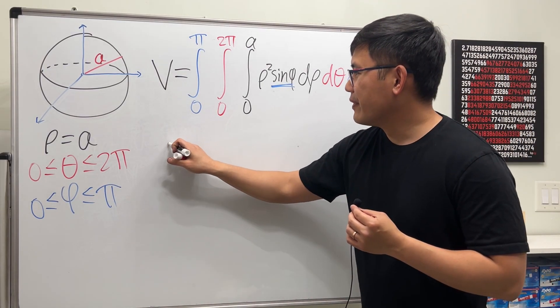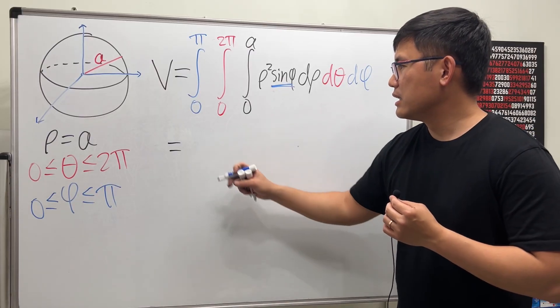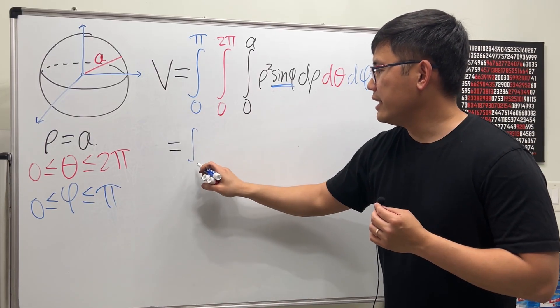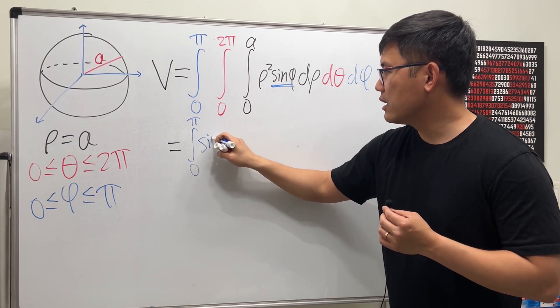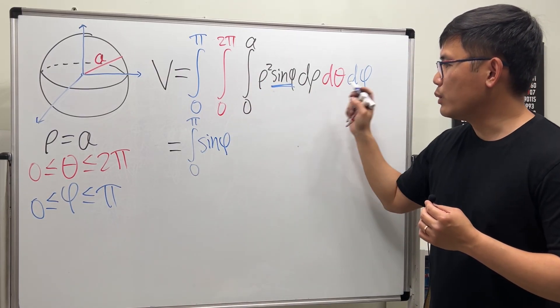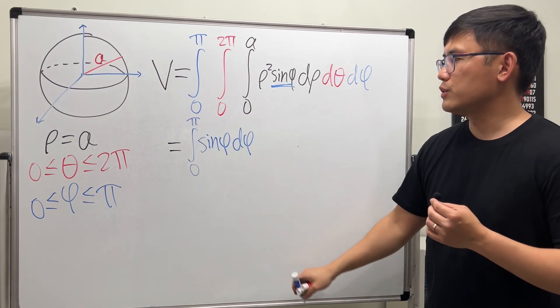The first one that I will do is the blue one, the integral going from 0 to π. And then I will have the sin φ right here. And then I integrate that with φ. So we have the dφ.